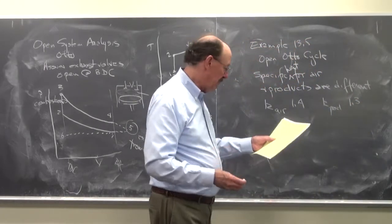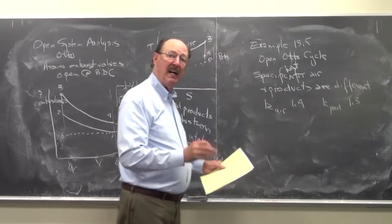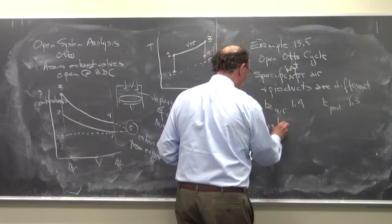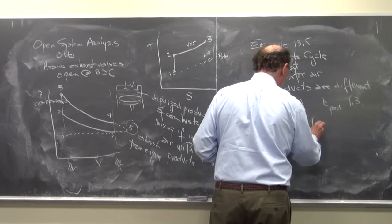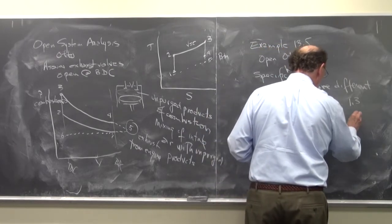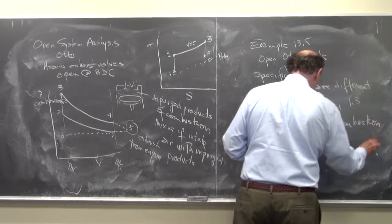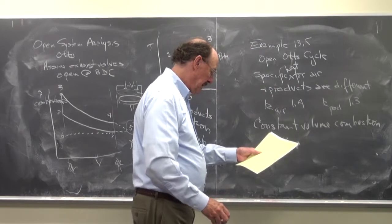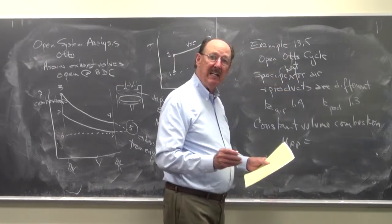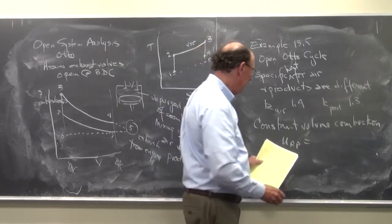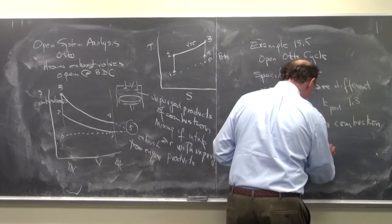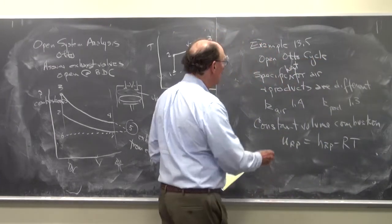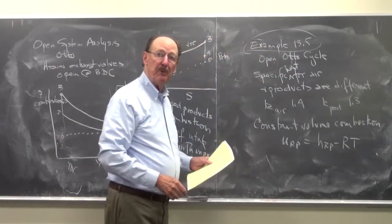And so we differentiate between that. And with constant volume, so if I have constant volume combustion, I'm going to need the internal energy. I'm going to need U sub rp, and so I have to modify the heating value for this internal energy value. So we're going to have that as H sub rp minus RT.